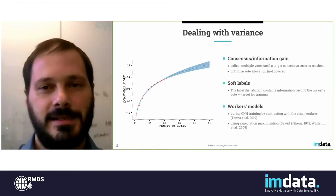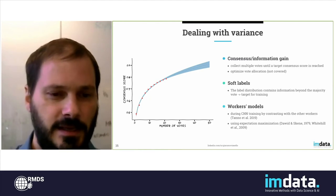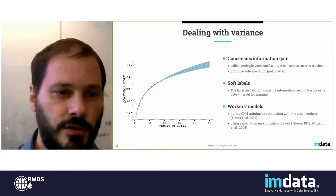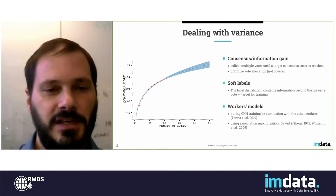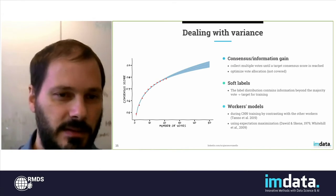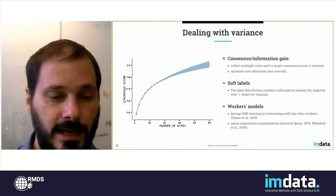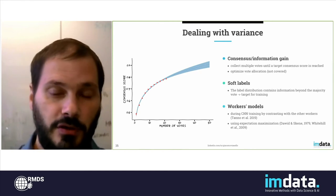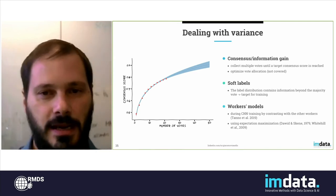There are techniques to deal with variance and with bias. For variance, the first thing you want to do is collect multiple votes for every item. In this plot, you have the consensus score — the agreement between workers — as a function of the number of votes. You can see a typical diminishing returns situation where at some point collecting more votes does not lead to a big improvement in consensus score. So you want to be smart about how many votes you collect, since collecting a lot of votes can be expensive. You don't need to collect the same number of votes on every item — some items are easier than others — so you can optimize the vote allocation.